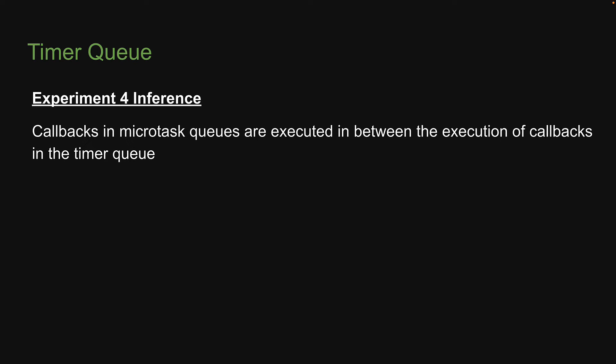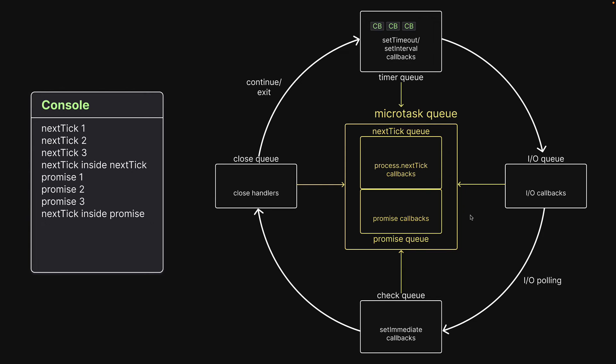Let me help you with the visualization. I'm going to skip to the part where callbacks in the microtask queues have already been executed. We start at the point where three callbacks are queued up in the timer queue. The first callback is dequeued and executed on the call stack, resulting in the setTimeout1 message in the console. The event loop proceeds and runs the second callback, resulting in the setTimeout2 message in the console. But this also queues up a callback function in the next tick queue. After every callback execution in the timer queue, the event loop goes back and checks the microtask queues. It identifies a callback in the next tick queue, which is dequeued and executed, resulting in the inner next tick message in the console.